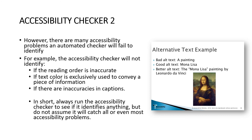For example, looking at an image of the Mona Lisa: a bad alt text would be 'a painting' — too vague. Good alt text would be 'Mona Lisa.' But better alt text would be 'The Mona Lisa painting by Leonardo da Vinci,' so the person with a visual impairment knows exactly what that slide image is about.